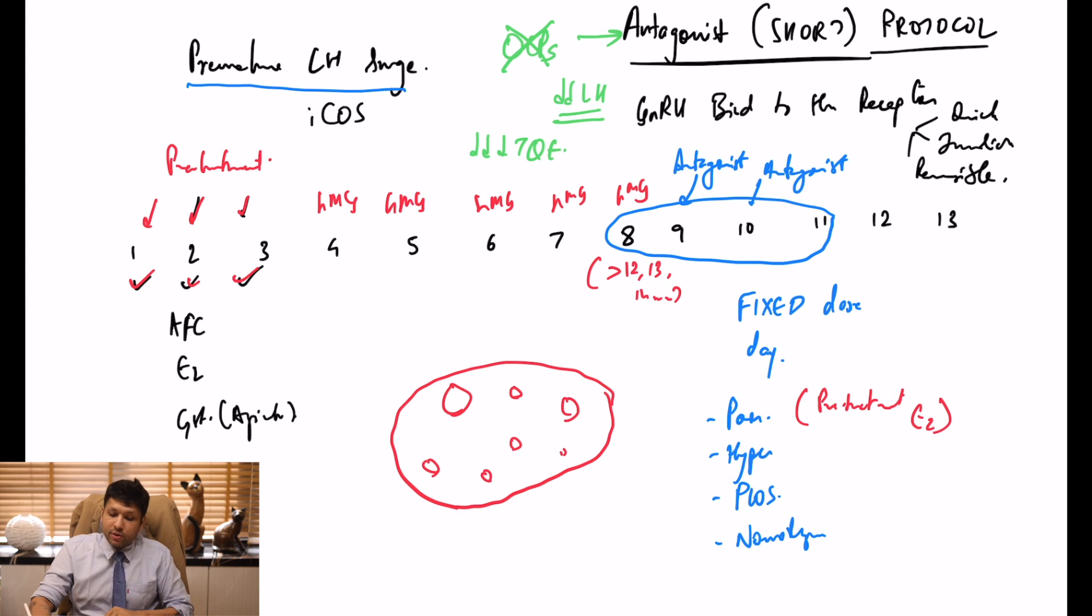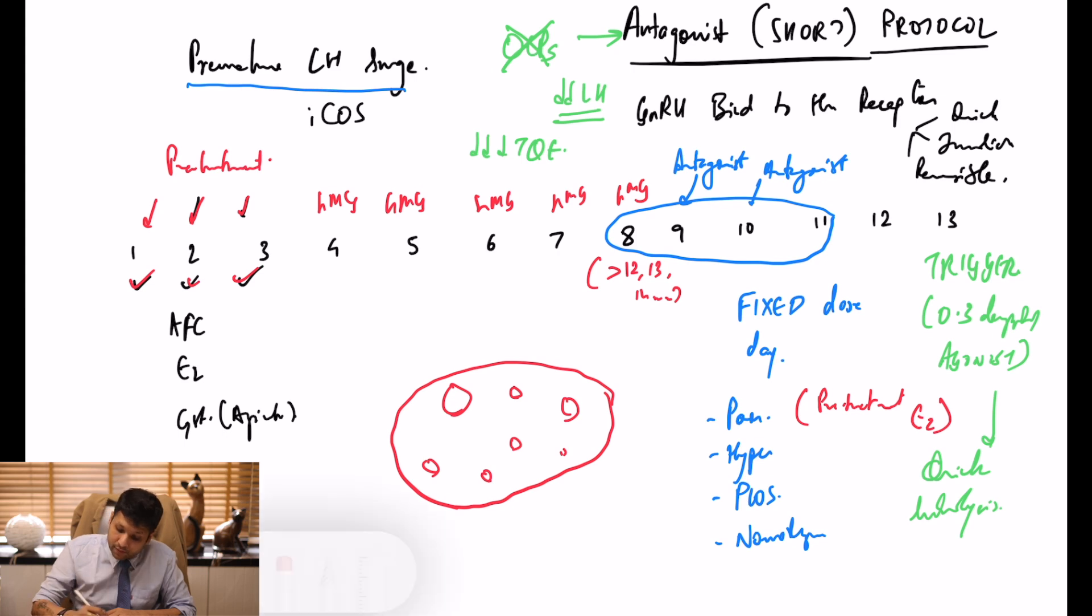Finally, there's one more thing you can do nicely with antagonist protocol and that is the trigger. The antagonist protocol gives you liberty to use 0.3 decapeptil or agonist as your trigger. When you use agonist trigger there is very quick luteolysis. This drastically reduces OHSS rates and can be used for dual stimulation. These are two great advantages.